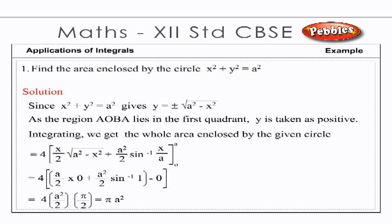Integrating, we get the whole area enclosed by the given circle equal to 4 × [x/2 · √(a² − x²) + a²/2 · sin⁻¹(x/a)] from 0 to a, which equals 4 × [a/2 · 0 + a²/2 · sin⁻¹(1)] − 0 = 4 × a²/2 · π/2 = π a².